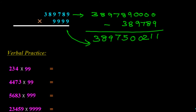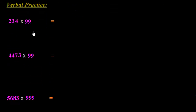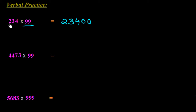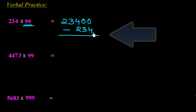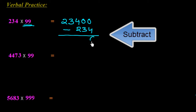Now let's do some questions verbally. We have to multiply 234 by 99. There are 2 digits in the 9-series, so we add two zeros to get 23400, then subtract 234. So: 10 minus 4 is 6, 9 minus 3 is 6, 3 minus 2 is 1, and 23 — giving the answer 23166.